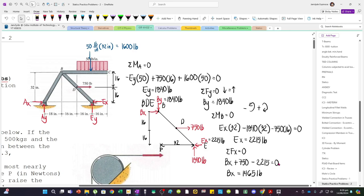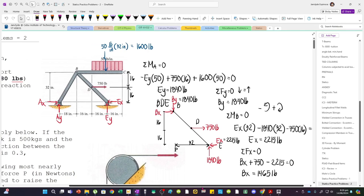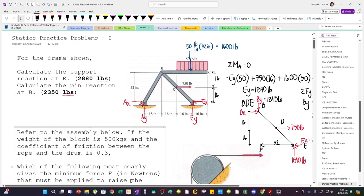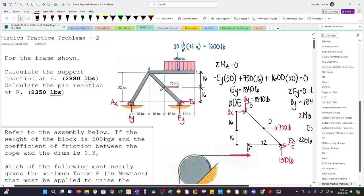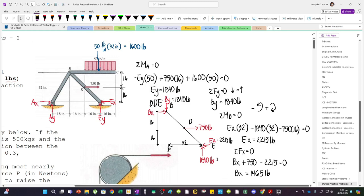So, we now have BY, BX, EX, and EY. So, we can now solve what's in the problem. Because, what we need is the support reaction at E, and pin reaction at B. So, we need their resultants. Because, again, the pin has two reactions. So, this is 1465.